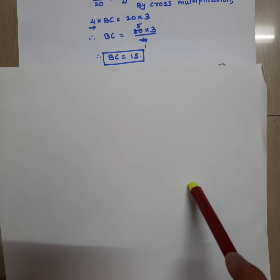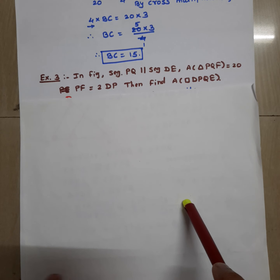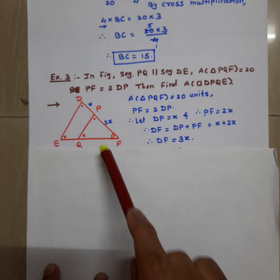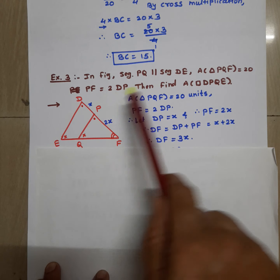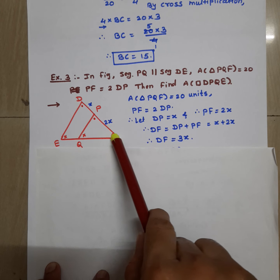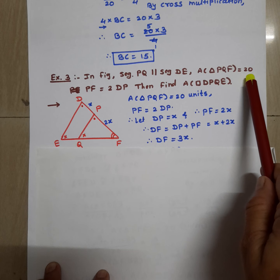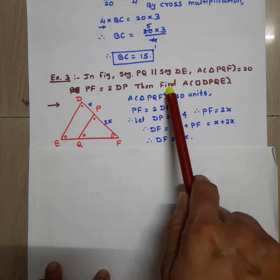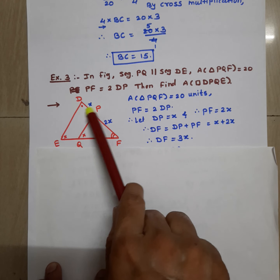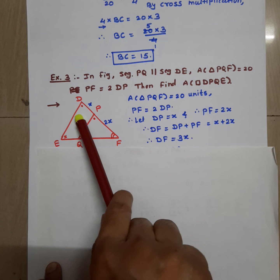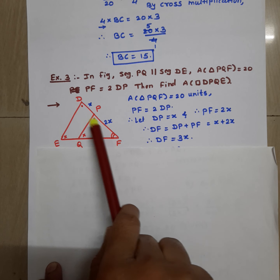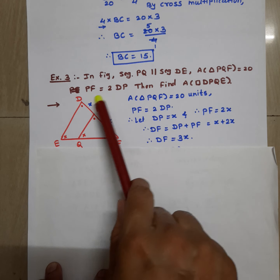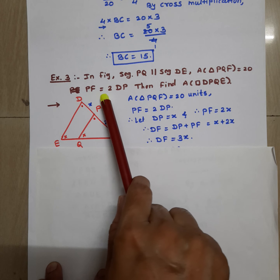Now consider the next example, which is different. In this figure, observe that PQ is parallel to DE. The area of triangle PQF, the smaller triangle, is given as 20 units. PF is equal to 2 times DP. We want to find the area of quadrilateral DPQE. This quadrilateral is part of the bigger triangle, and PQ is parallel to DE.